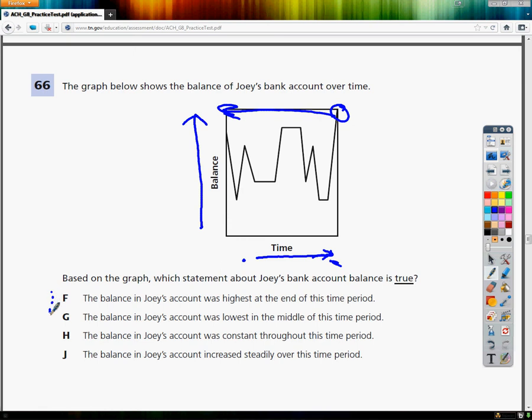G says the balance in Joey's account was lowest in the middle period. The middle period probably represents something like right here. But at this point in the middle, he's not doing all that badly. If this is the exact middle, it's still not the lowest point. Here are the lowest points. So G is not the right answer.